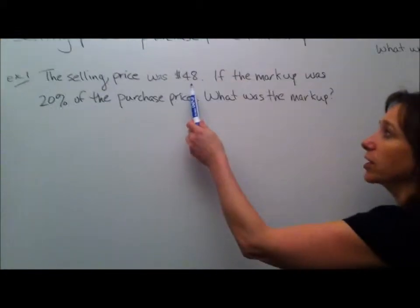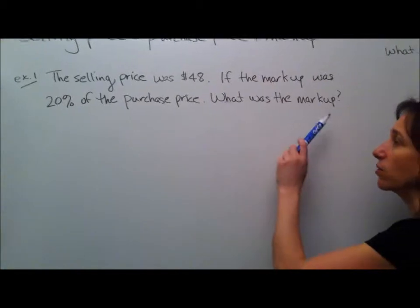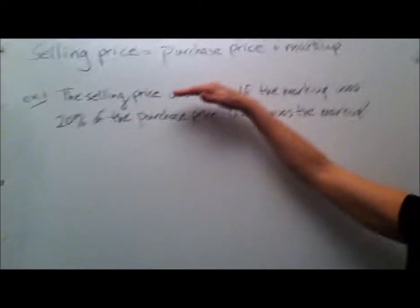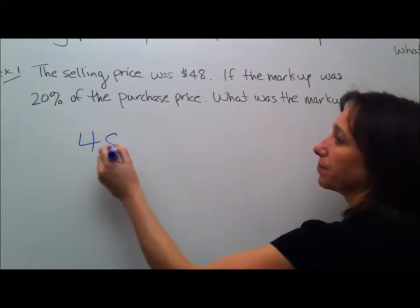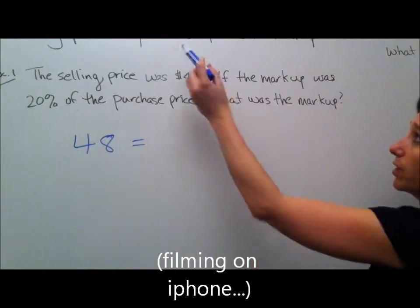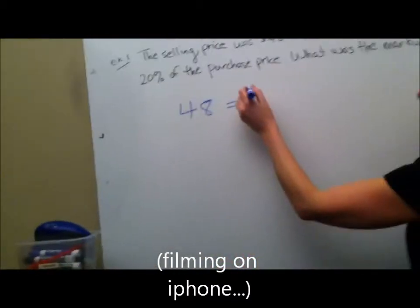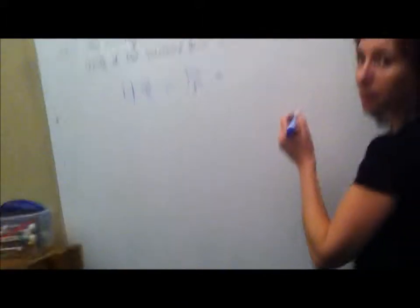So let's read example one. The selling price was $48. If the markup was 20% of the purchase price, what was the markup? So it tells us right here that the selling price was $48. So where it says selling price, we just put $48. We need the purchase price, but it doesn't tell us the purchase price. So that will be our variable, P sub P. And our markup.